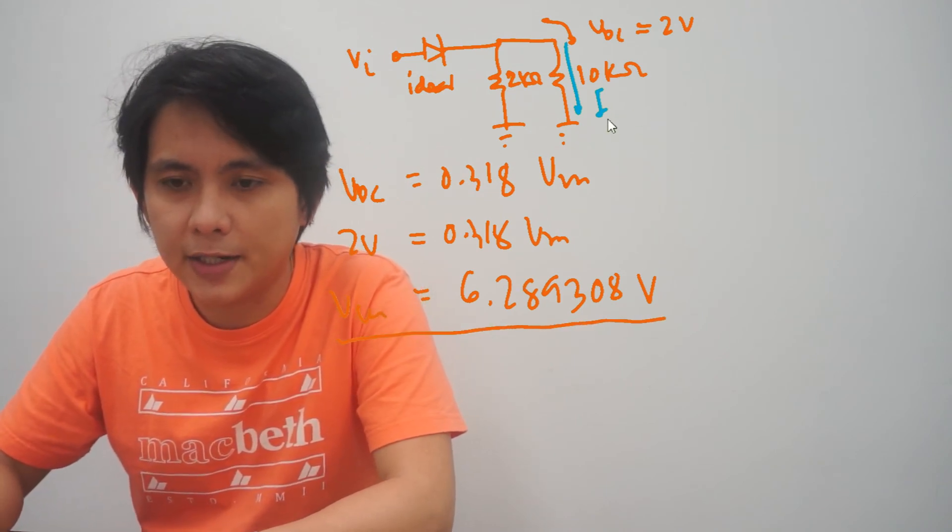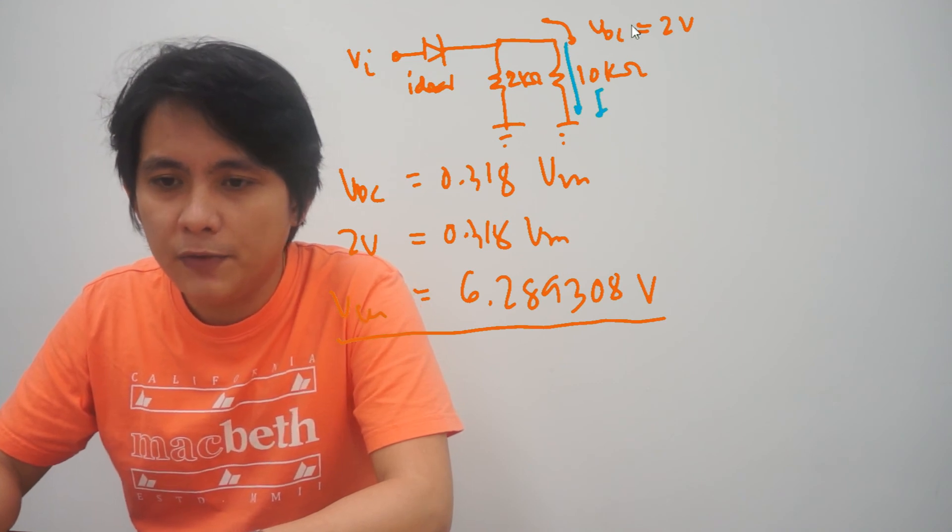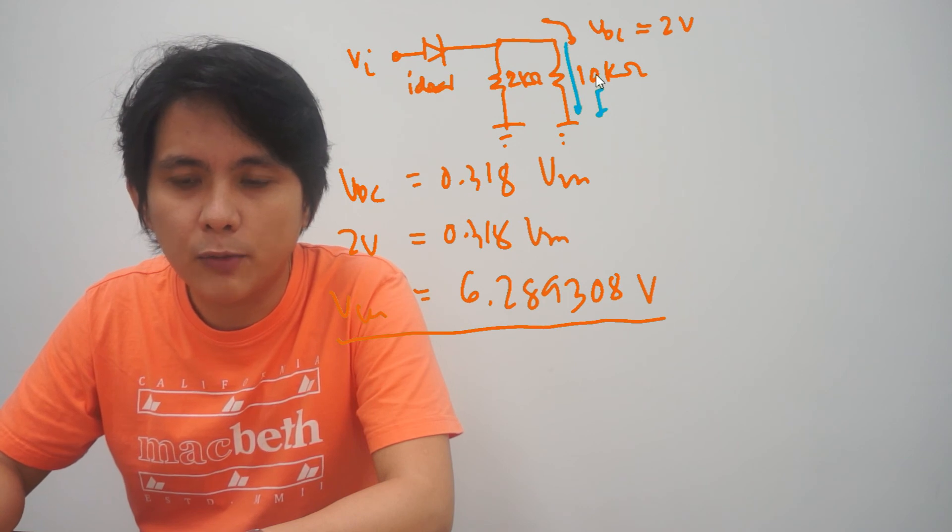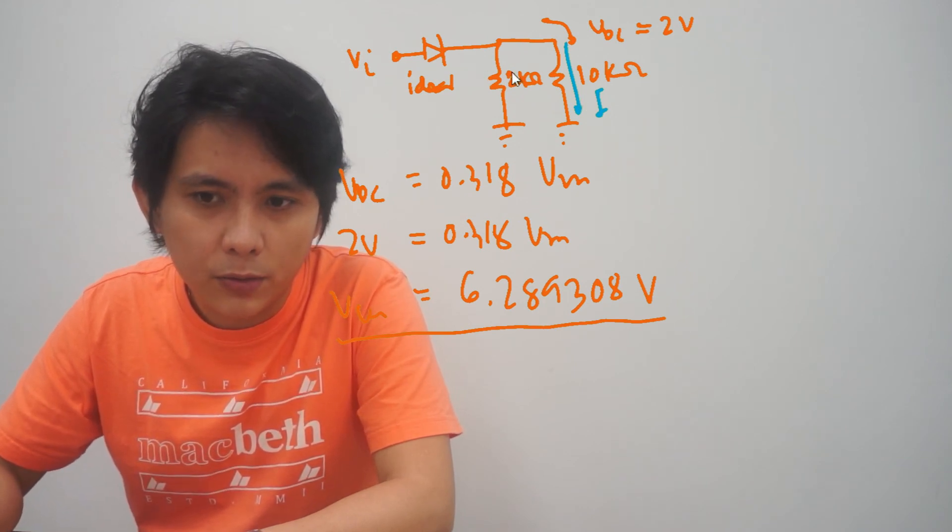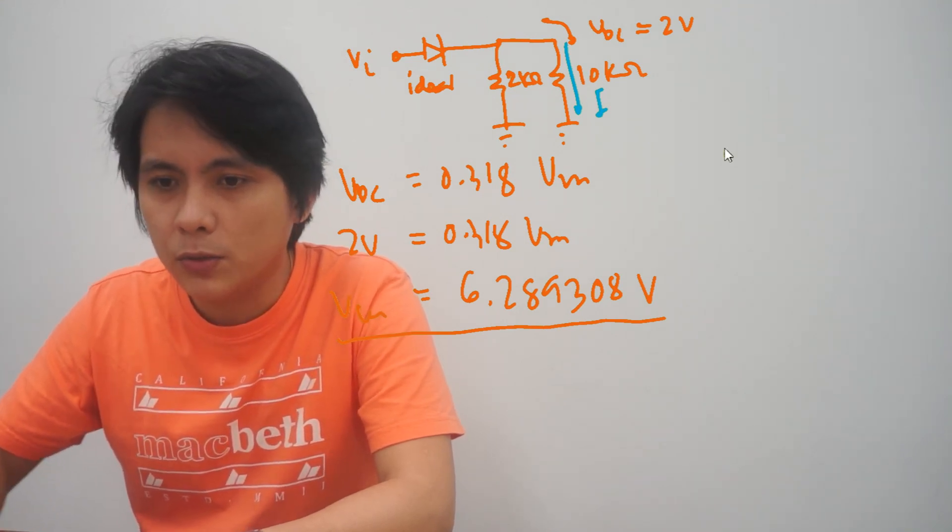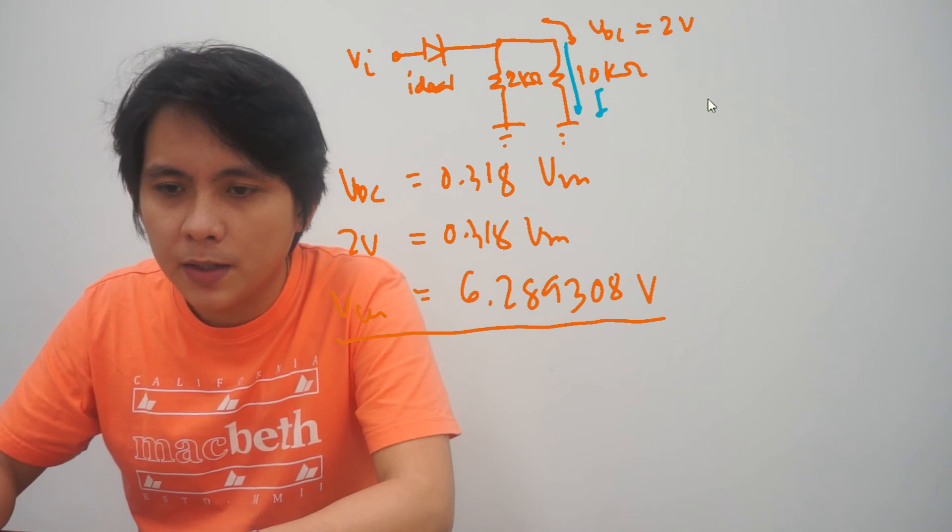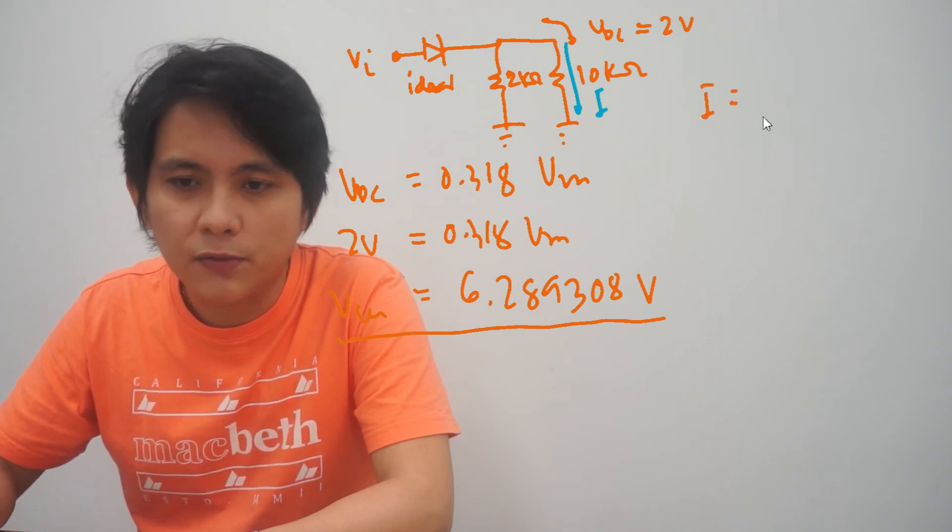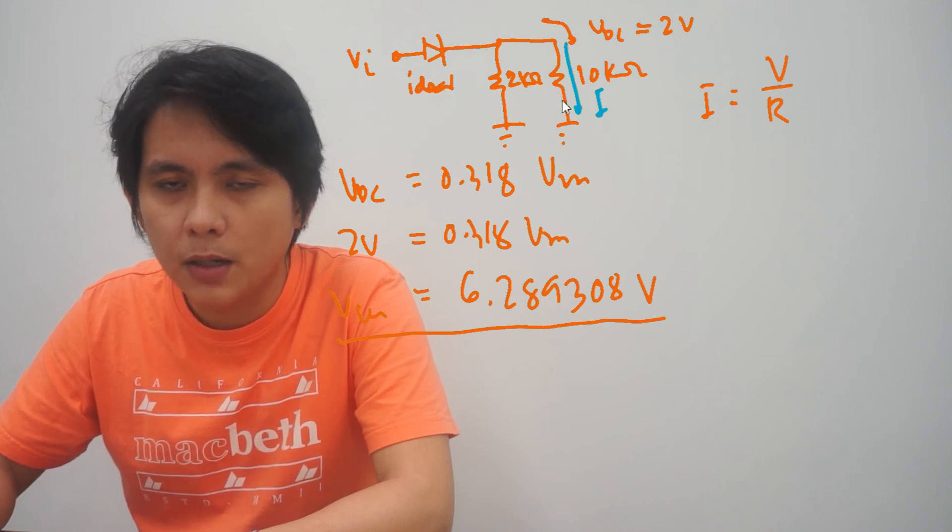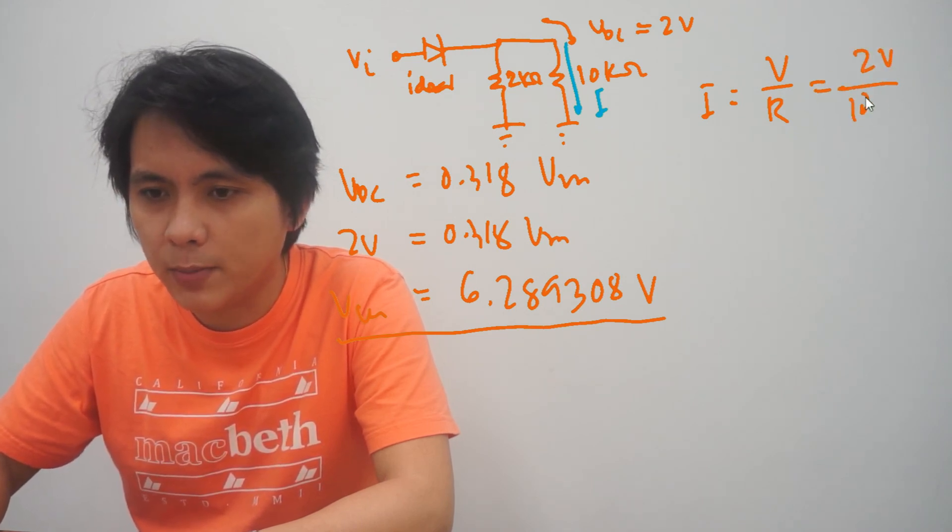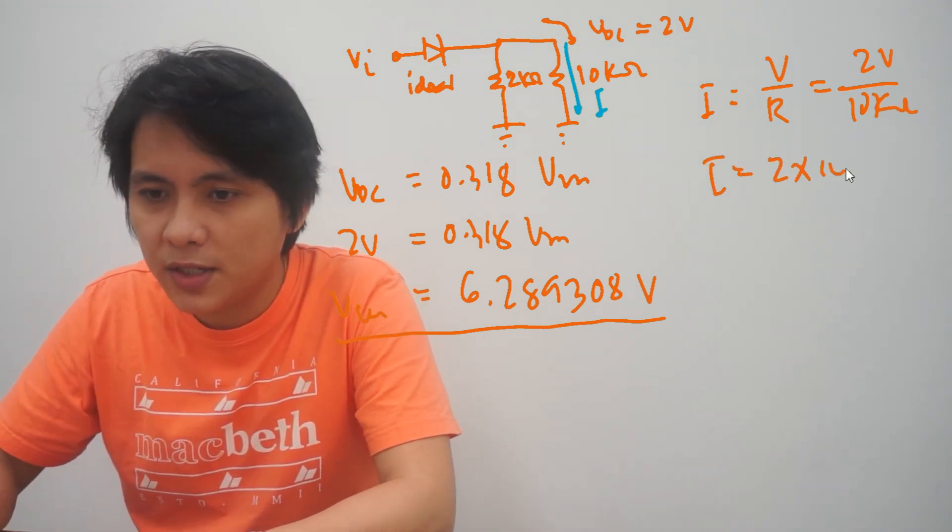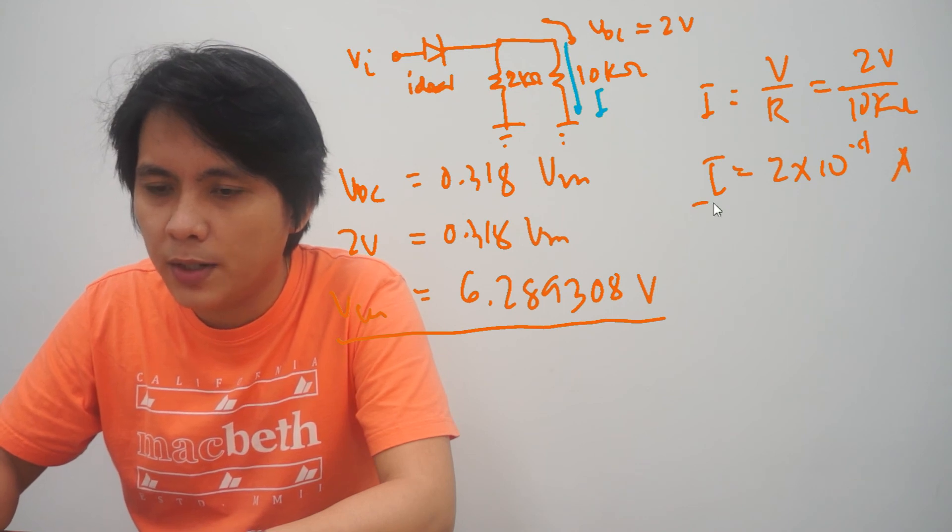Now let's find the current I. We have here the V DC of 2 volts. Since these two resistors are connected in parallel, therefore 2 volts can be measured either on the 2k ohm resistor or the 10k ohm resistor. To get I, that is just voltage divided by the resistance on this branch here: 2 volts divided by 10k ohm. Therefore, our current is 2 times 10 to the negative 4 amperes.